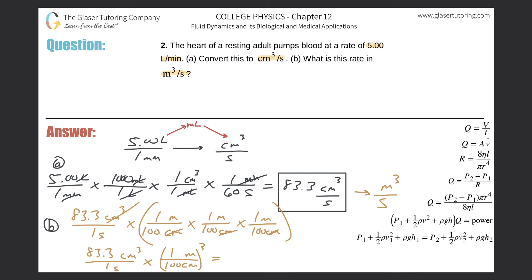It becomes 8.33 times 10 raised to the negative 5, and that's now cubic meters per second. There you go, voila!